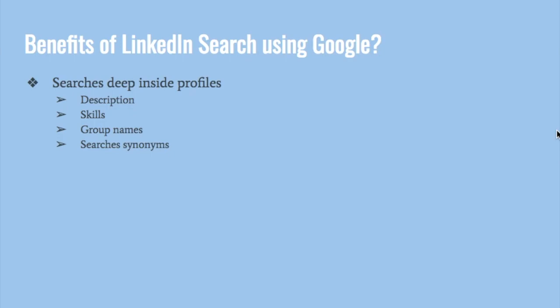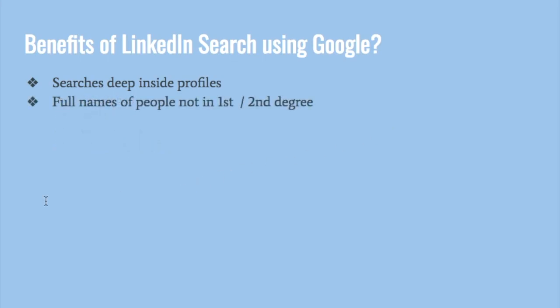To summarize the benefits of using Google over LinkedIn: first, Google does a deep search so you can use precise keywords and target prospects more accurately. Second, Google searches public profiles, giving you full names and basic information for everyone, not just first or second-degree connections. Third, Google enables advanced prospecting techniques that LinkedIn does not support. And best of all, Google is free with no monthly search limits. Thank you for watching. If you're interested in a free session on how to use Google Custom Search Engine, please sign up via the Calendly link.